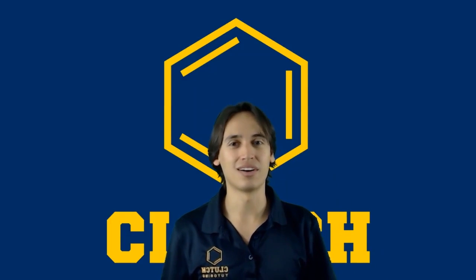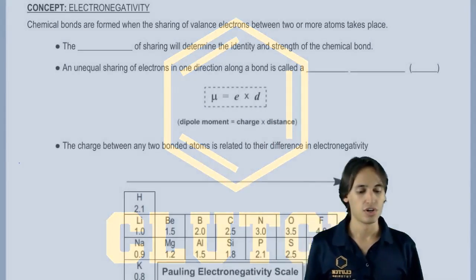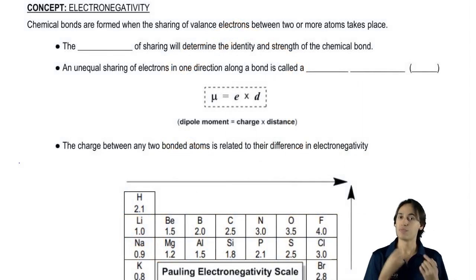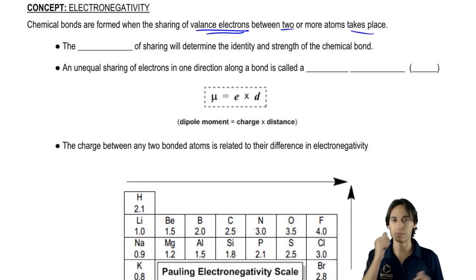Now I want to talk about one of the most important concepts in all of chemistry and that's electronegativity. As you guys already know, chemical bonds are formed by the sharing of valence electrons between two atoms. So when two atoms share their electrons with each other, that forms a bond.